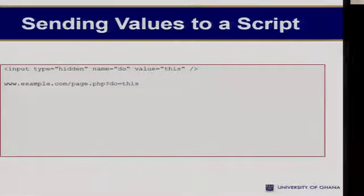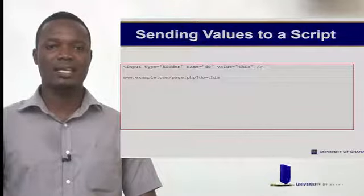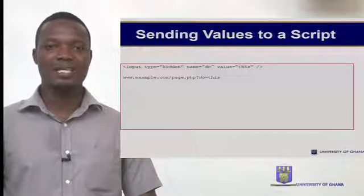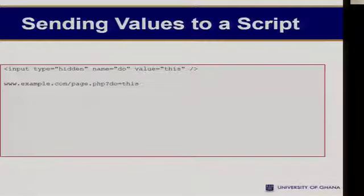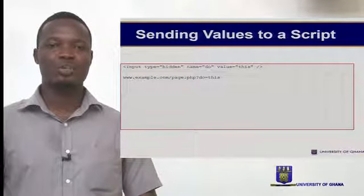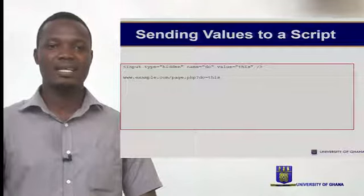To send values to a script using the hidden form, we are going to use the hidden input. The type of the input is going to be hidden. Then you pass in the name — that's the name we're going to use to access this variable when we get to the PHP script. The value is the value you also want to pass to that script. So to pass values from one script to another, we can use the hidden input.